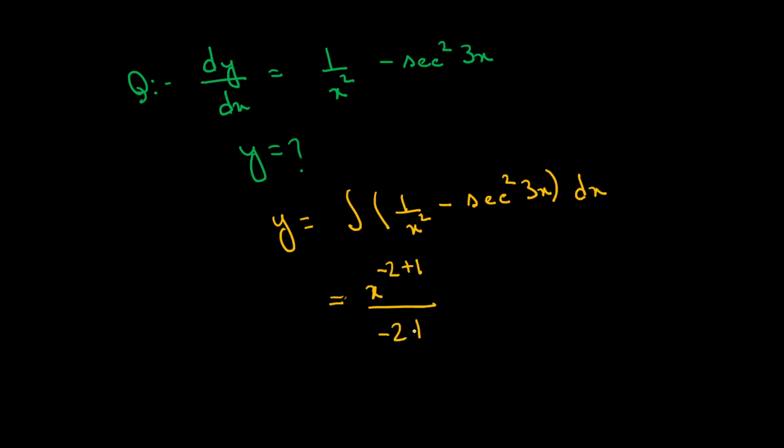And c square x, when integrated, gives minus c square 3x integrated is tan 3x by 3 plus c.